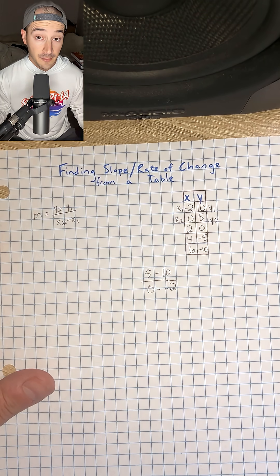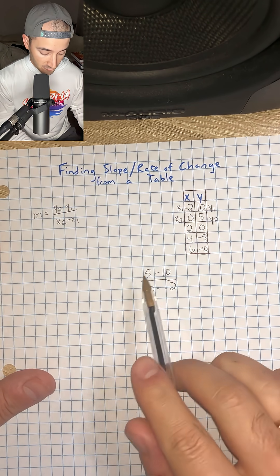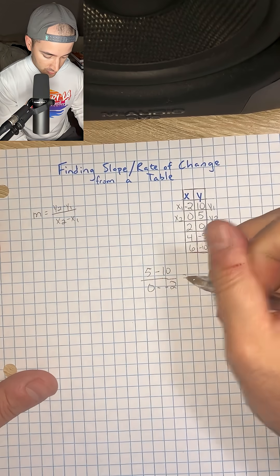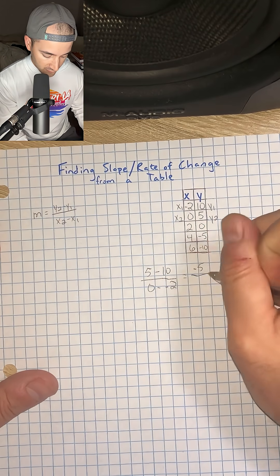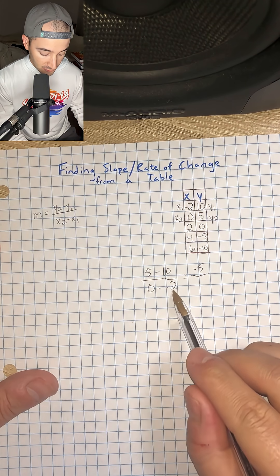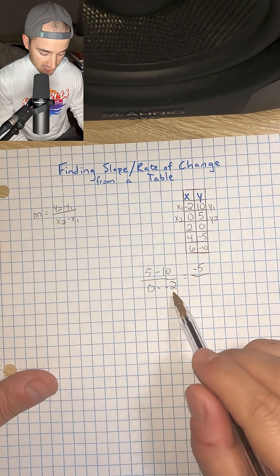And so now we can just simplify our fraction. So 5 minus 10 is equal to negative 5, over 0 minus negative 2 is the same thing as 0 plus 2.